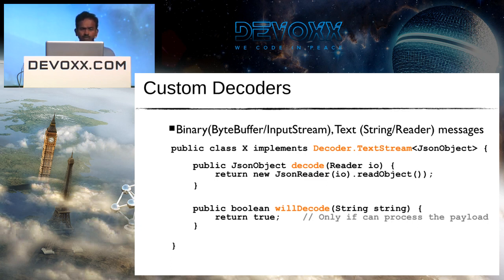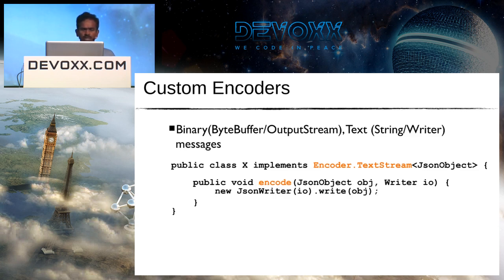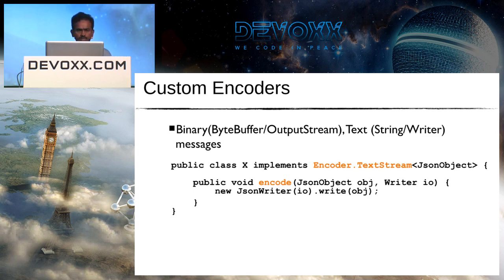Encoders are analogous to decoders — they take an object and convert it to bytes or write to an output stream. For example, implementing Encoder.TextStream takes a JSON object and writes it to a Writer. Or implementing Encoder.Text would return a String. You can create your own encoders and decoders and plug them into the runtime.